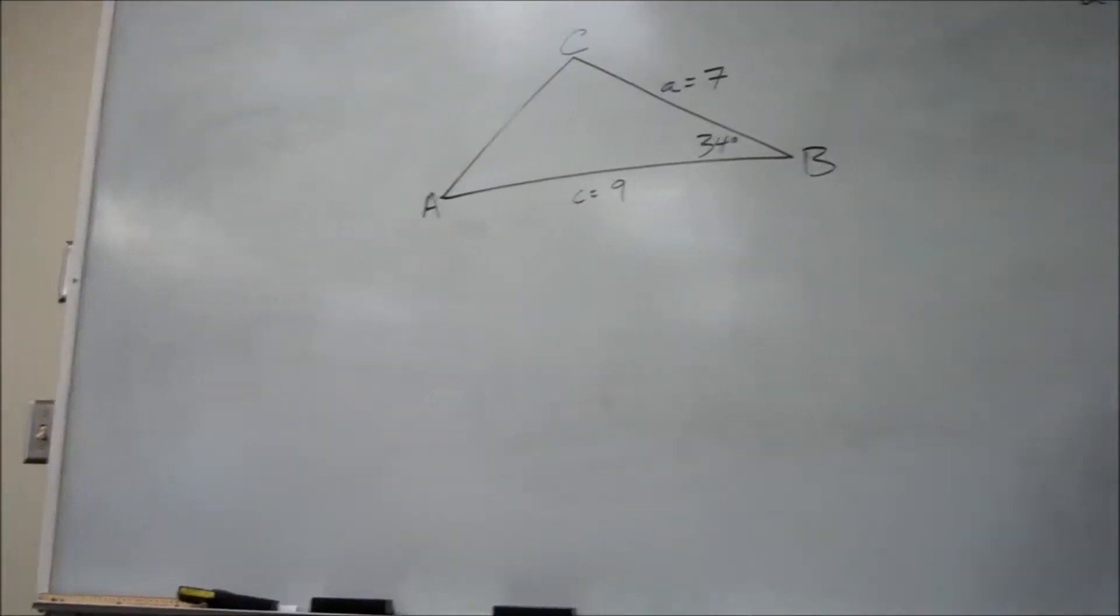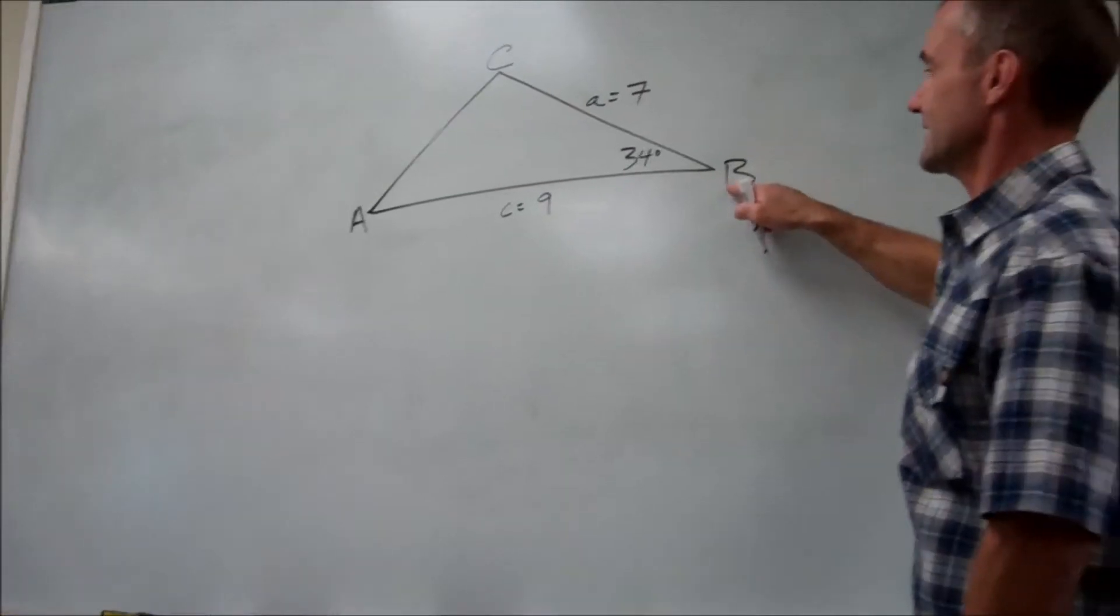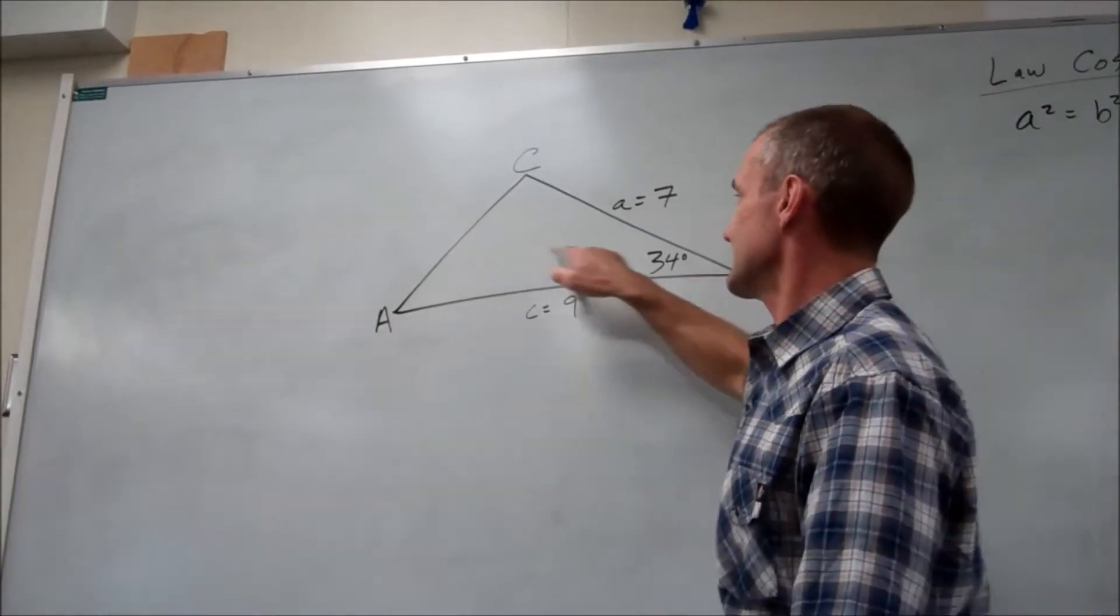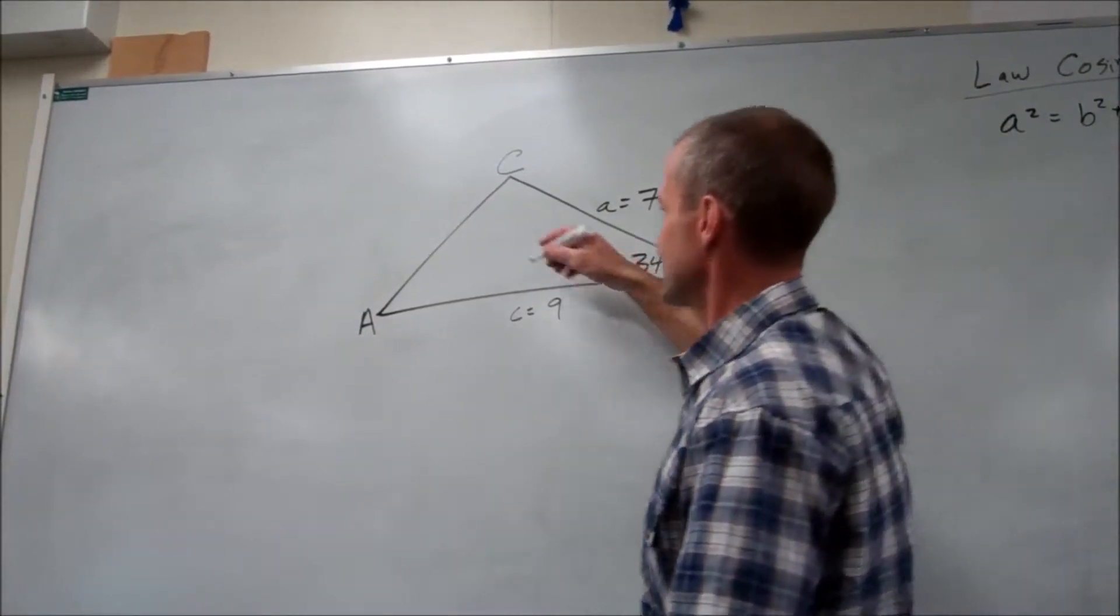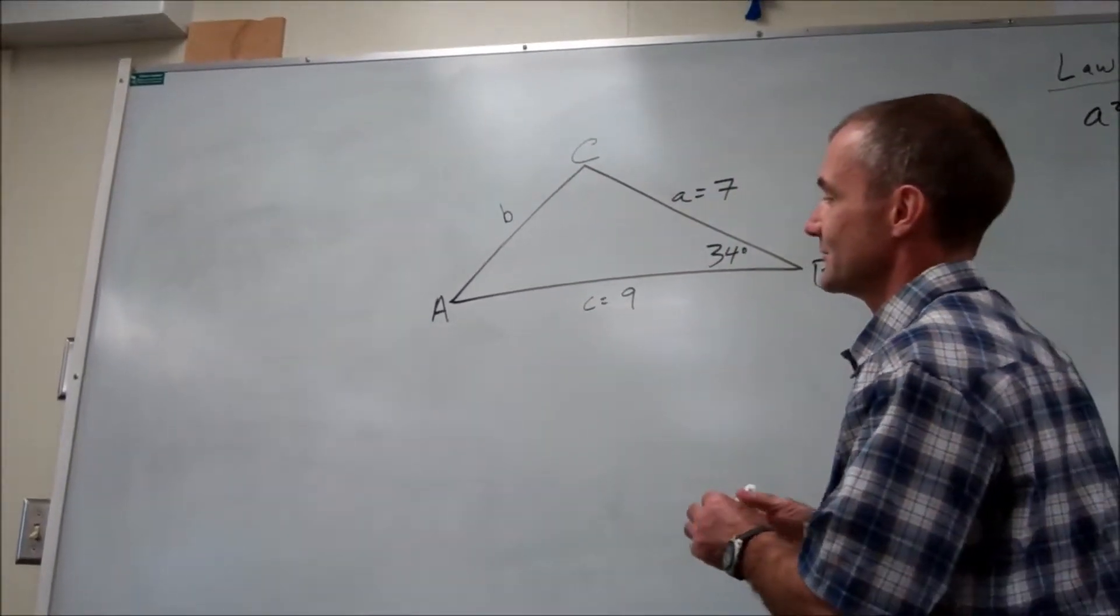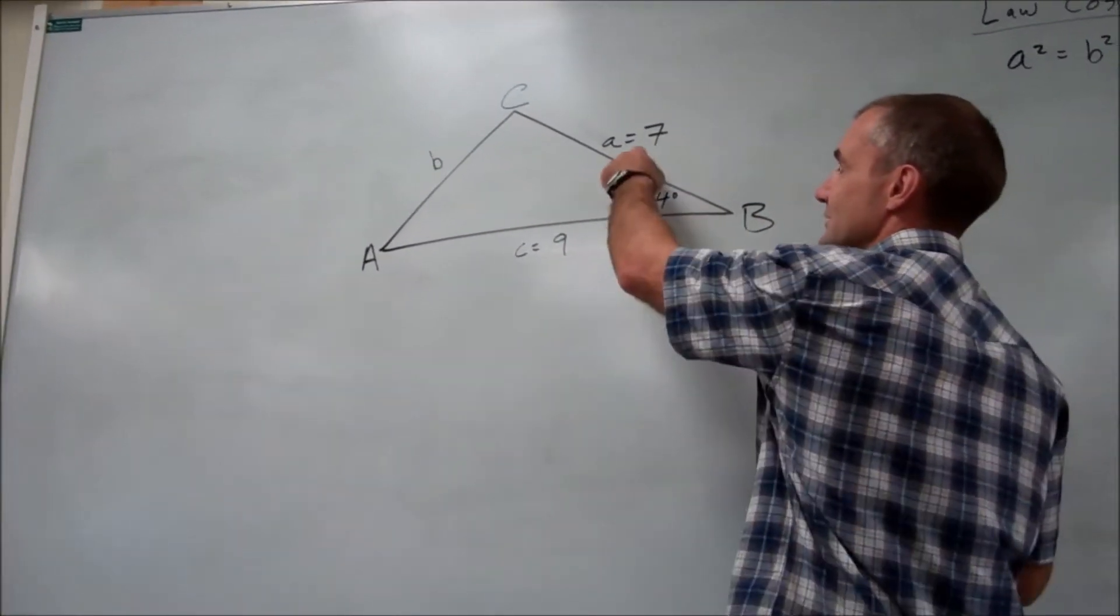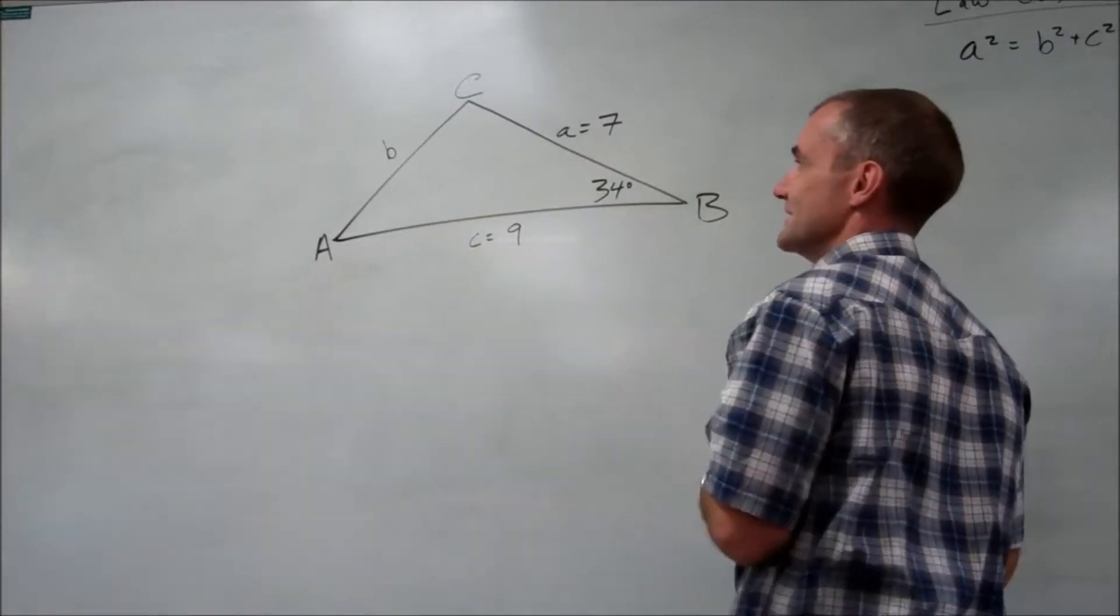I'm going to use the law of cosines. And I'm going to take the side opposite the given angle. So that's going to be B. And it is important, capital letter for the measure of an angle, lowercase letter, length of a side opposite that given angle.